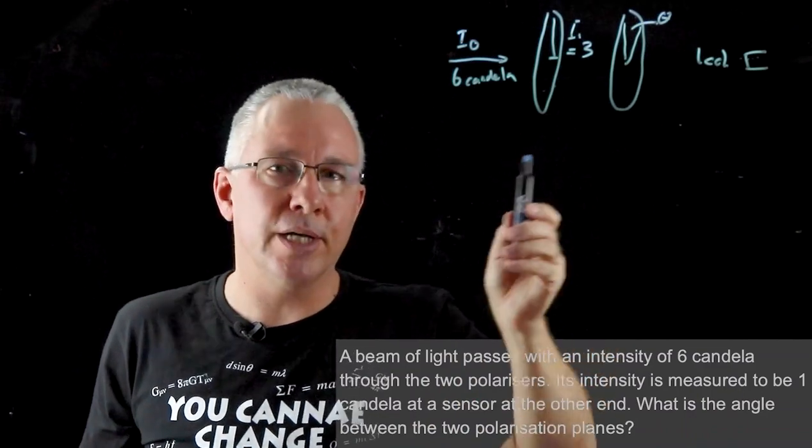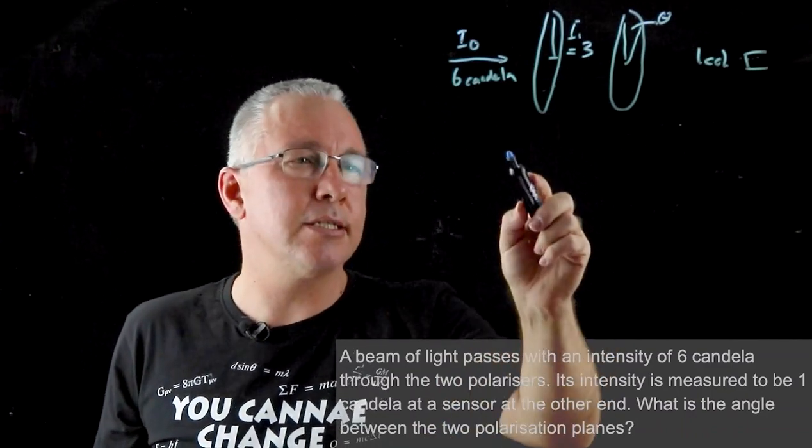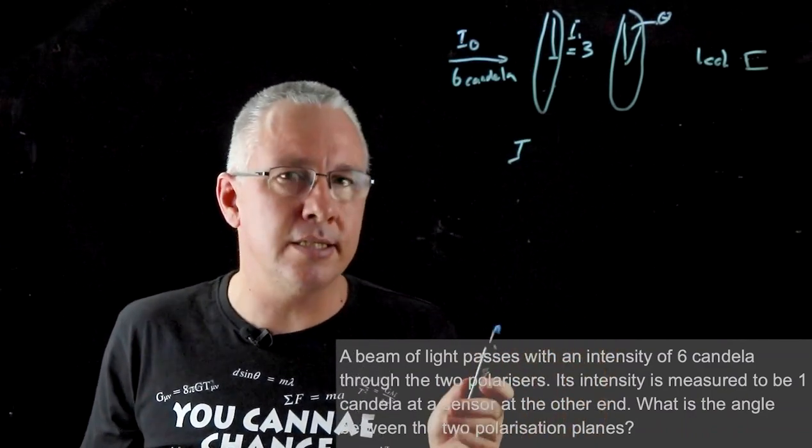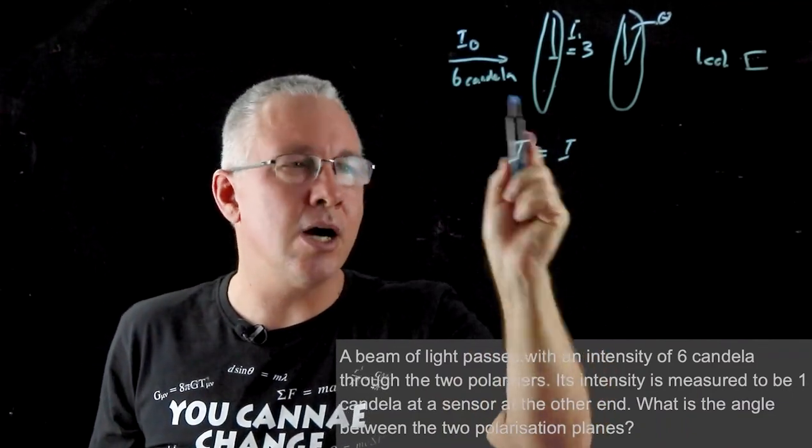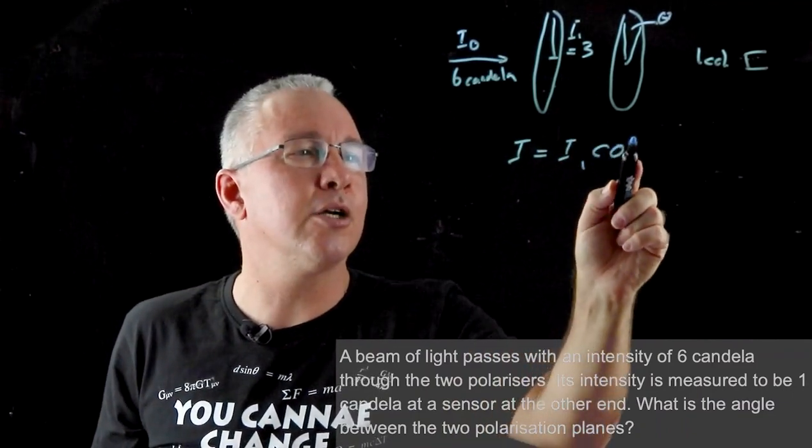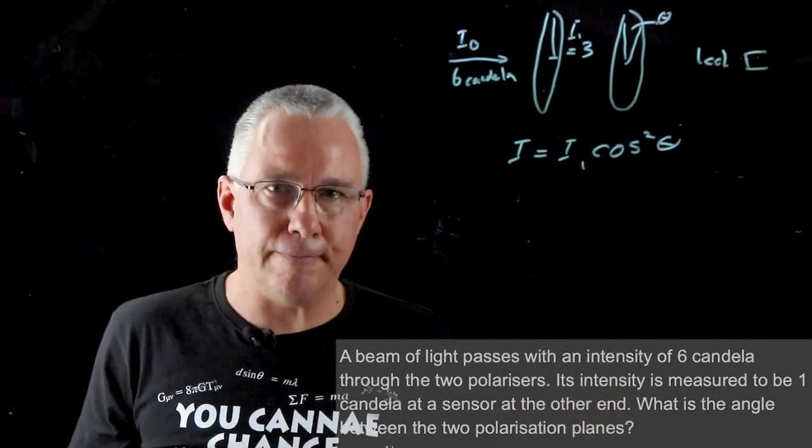Therefore we can now work with Malus's law. Now what is Malus's law? Malus's law says the intensity that you receive is the initial intensity, which is our I1 in this case, multiplied by the cosine squared of the angle between them.